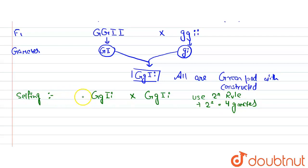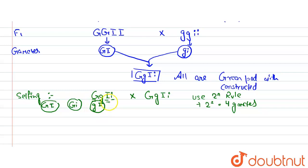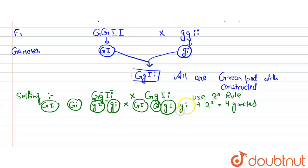Let us see how. First, capital G with capital I gives us capital G capital I. Then capital G with small i gives capital G small i. Then small g with capital I gives small g capital I. Again, small g with small i gives small g small i. These are 4 combinations or gametes we get. The same gametes on the other side are: capital G capital I, capital G small i, small g capital I, and small g small i.